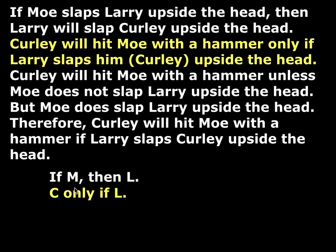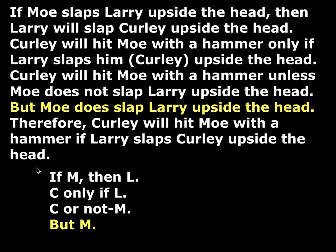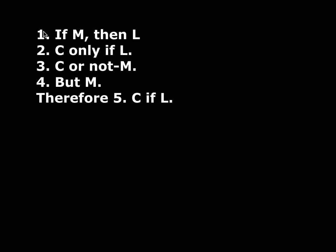Next: C only if L. Next: C unless not M — because 'unless' means 'or not,' so that's C or not M. But M — and then finally, therefore C if L. So this is the stage where I've separated these out and they're in a kind of half-English, half-formal notation. Now I'm going to rewrite these, number them, and add a line.